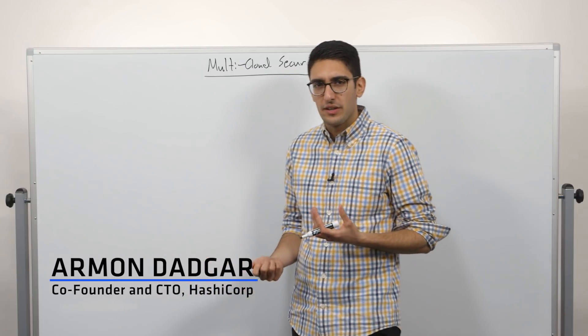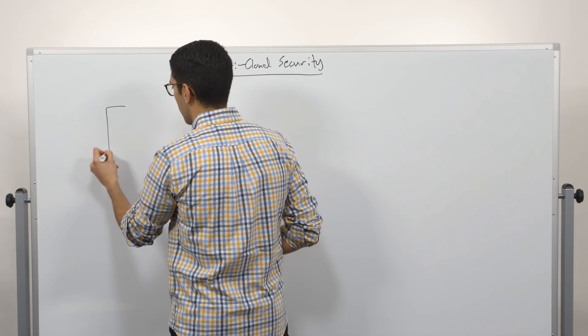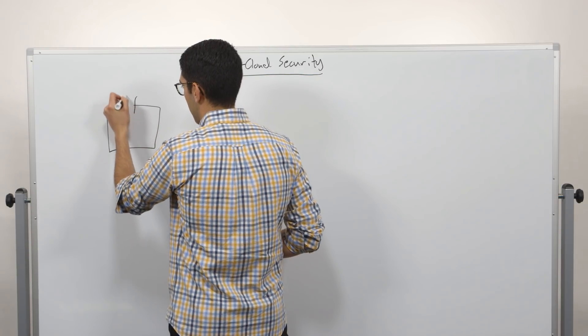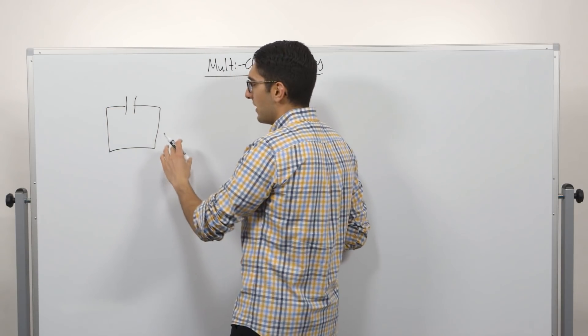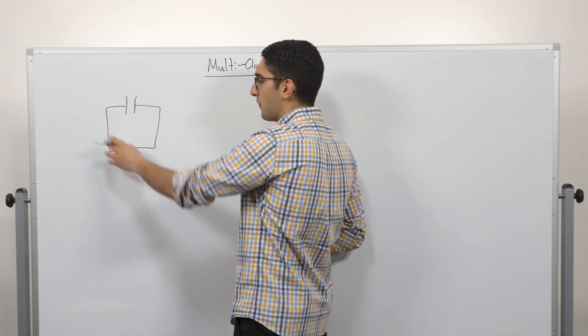When we talk about multi-cloud security, I think what's helpful is first starting and talking about what did security look like in the traditional private data center. And oftentimes what we see is a perimeter-centric approach, right?